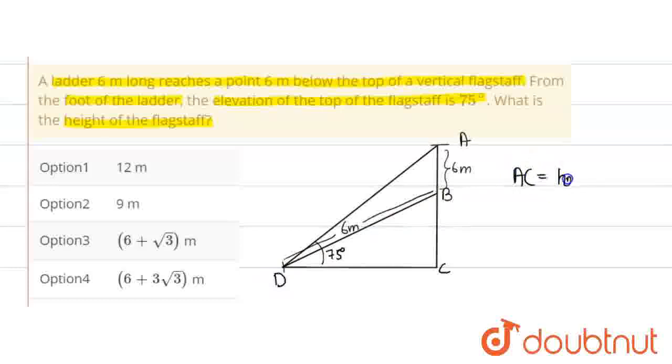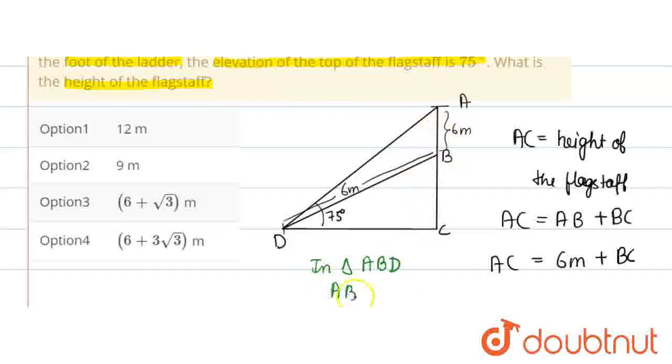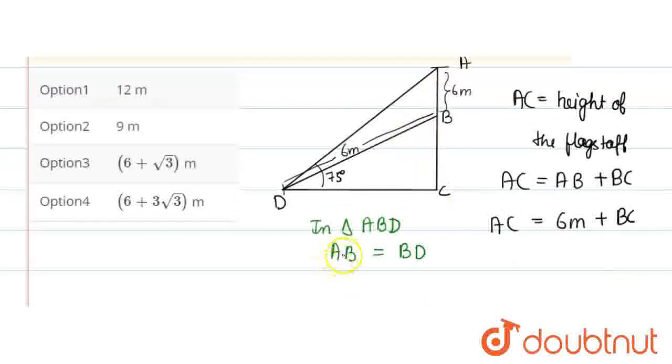Here is the height of the flagstaff. In triangle ABD, AB equals BD, so this theta will be equal here. So angle A equals angle BDA equals theta. If this is theta and the whole angle is 75 degrees, then how much will it be? 75 degrees minus theta. So this is 90 degrees.